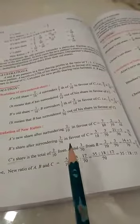Now C's share is not given to us, but we know very well that C is acquiring from A and B. What is C acquiring? Whatever A and B are surrendering. How much are A and B surrendering?